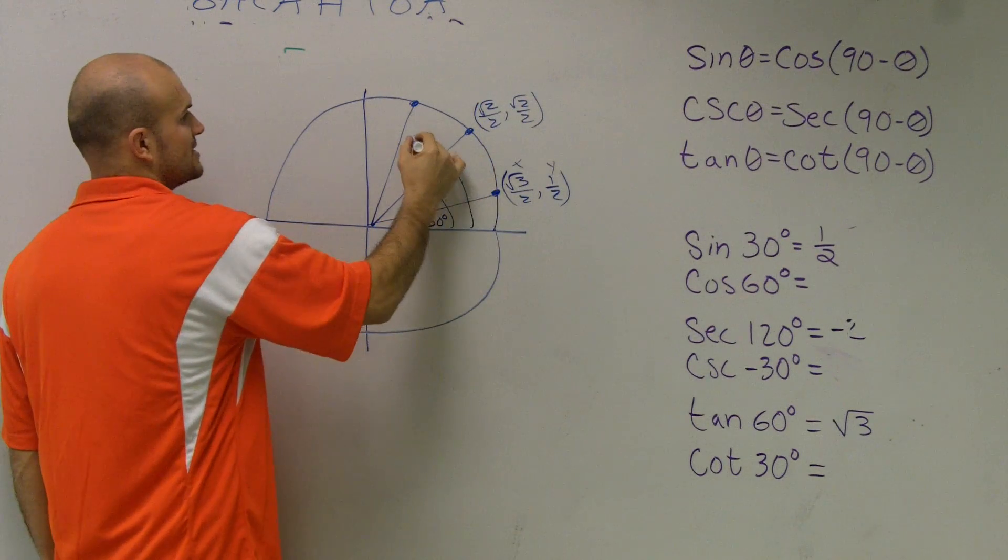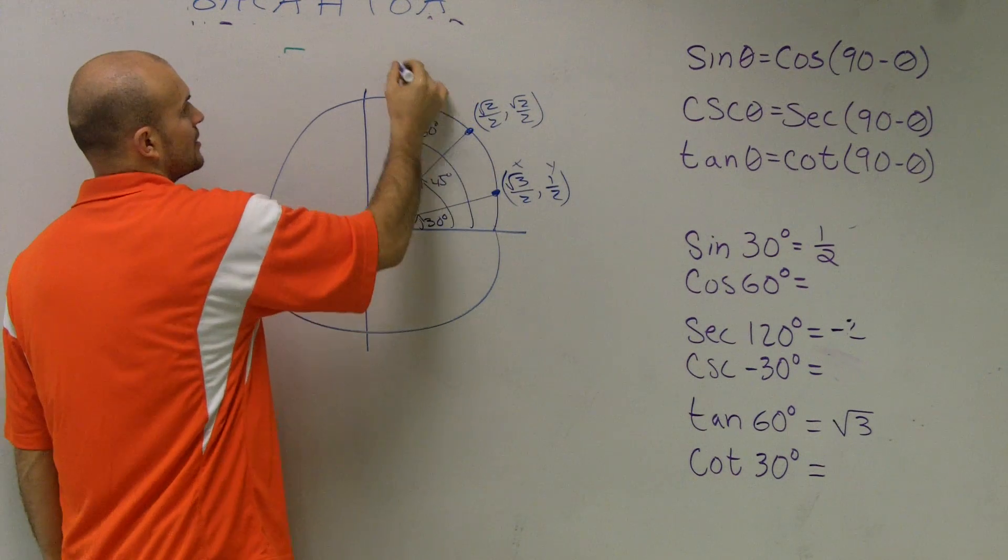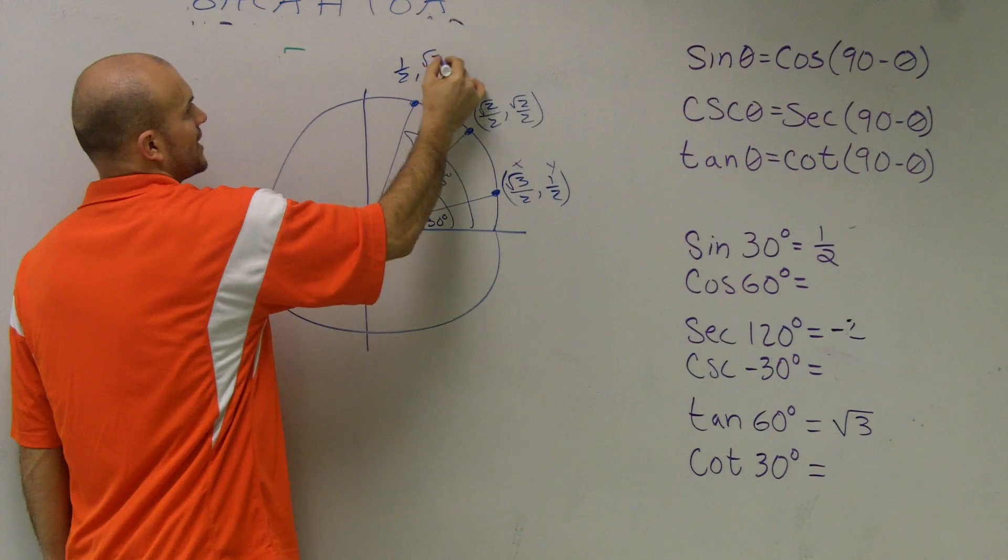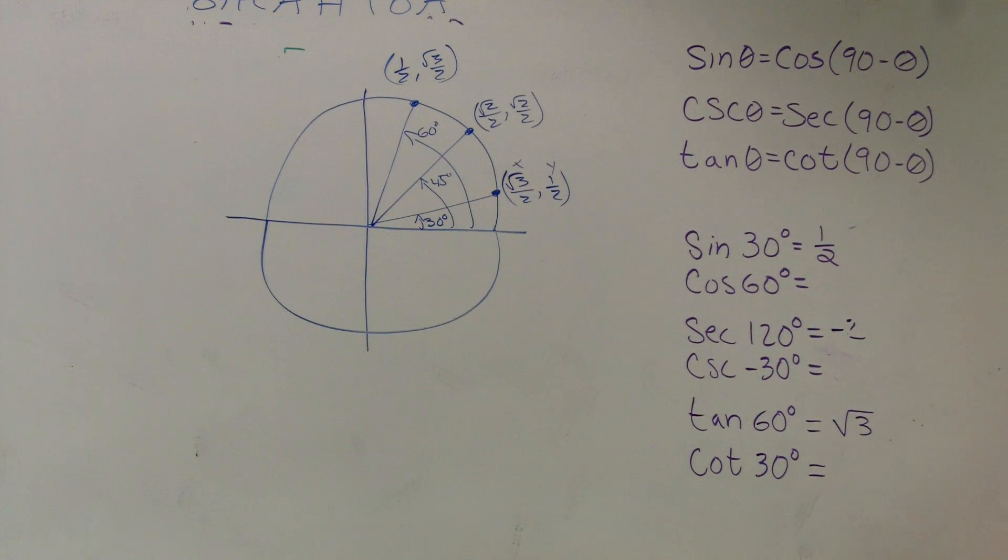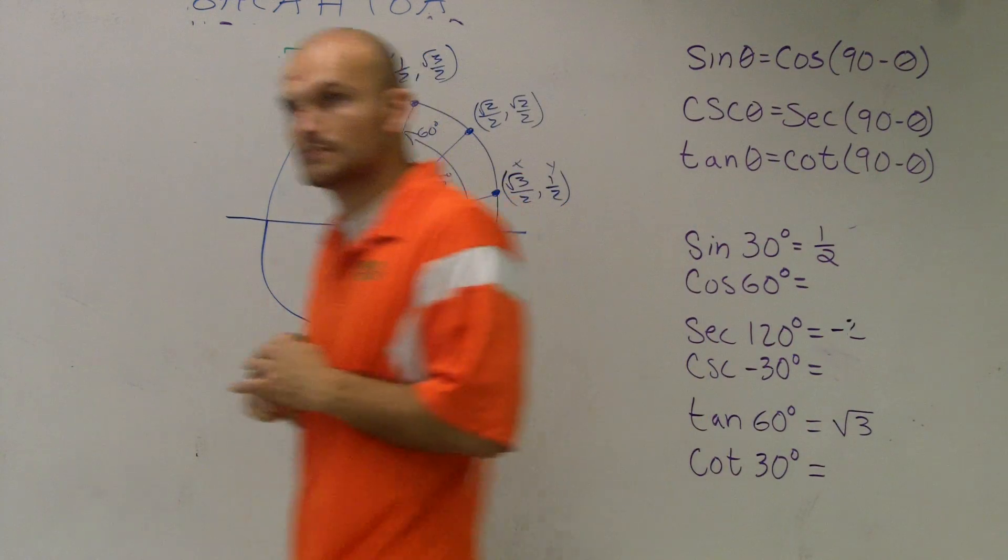And then for 60 degrees, we had 1 half, radical 3 over 2. So, can everybody look at their unit circle and know that that's what we have for those three points? Does everybody agree with that? Yes.